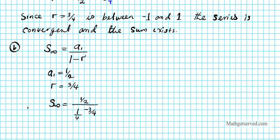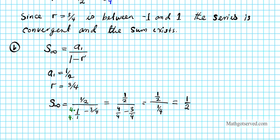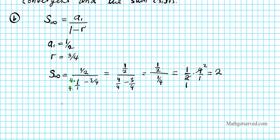We express 1 as the fraction 4/4 to get a common denominator. So we have 1/2 divided by 4/4 minus 3/4, which equals 1/2 divided by 1/4. Now we multiply the numerator by the reciprocal of the denominator: 1/2 times 4/1. Cross-reducing, 2 goes into 2 giving 1, and 2 goes into 4 giving 2. So the infinite sum is simply 2. If you add the pattern 1/2 plus 3/8 plus 9/32 forever to infinity, it equals 2.